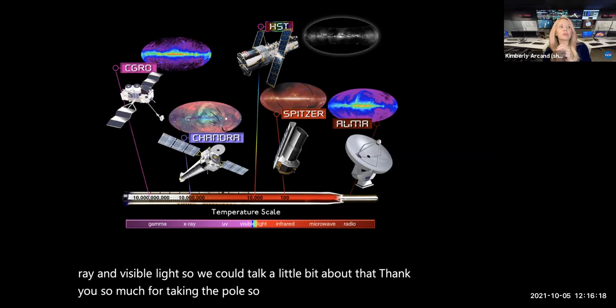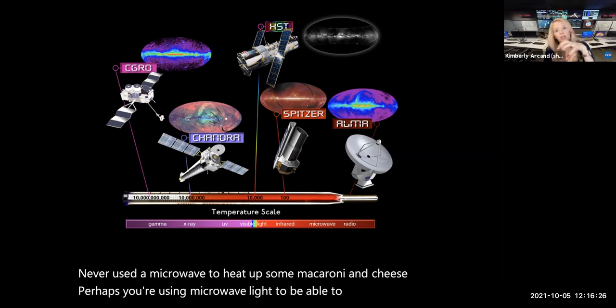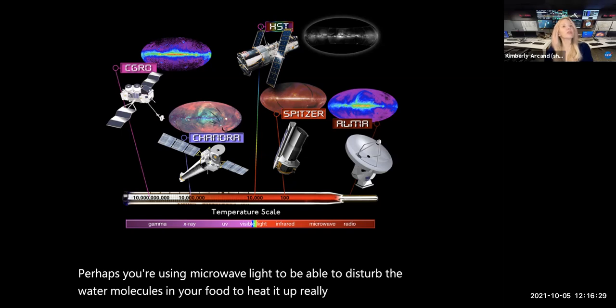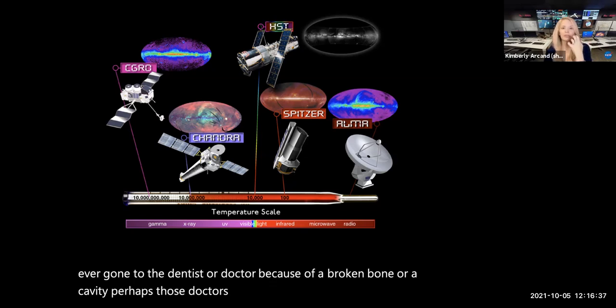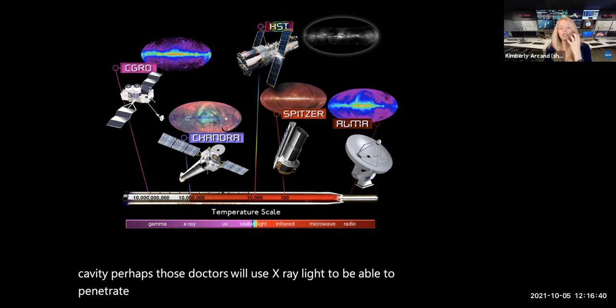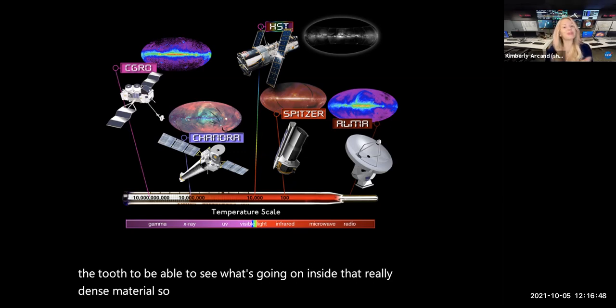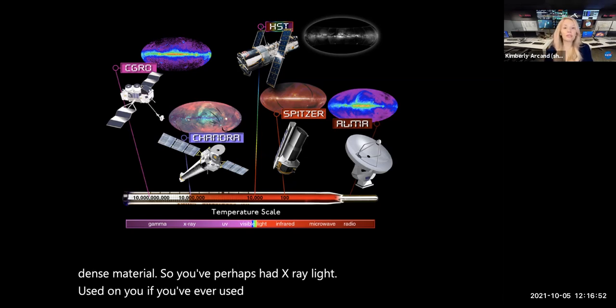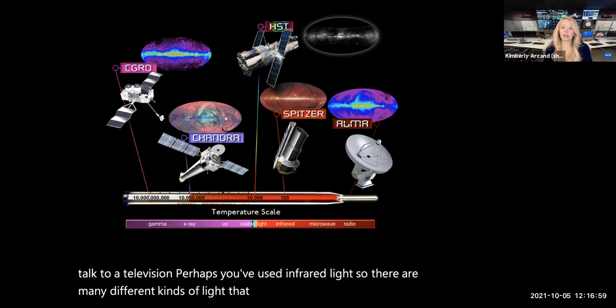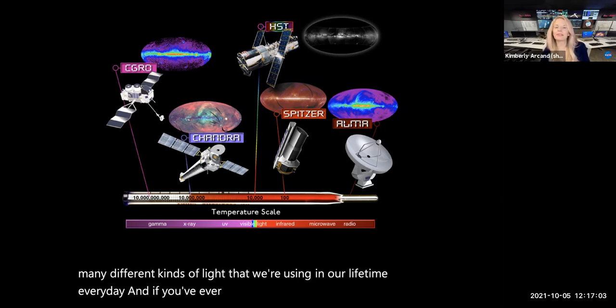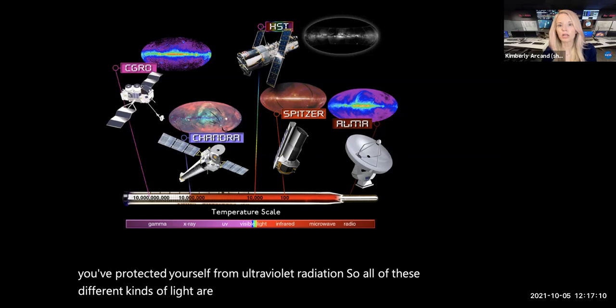And so we're seeing all different kinds of answers trickle in now for our poll on what kinds of light people have experienced or used here on Earth. So we pretty much have even numbers for infrared, ultraviolet, x-ray, and visible light. So we could talk a little bit about that. Thank you so much for taking the poll. So for example, if you've ever used a microwave to heat up some macaroni and cheese, perhaps you're using microwave light to be able to disturb the water molecules in your food to heat it up really quickly. If you've ever gone to the dentist or a doctor because of a broken bone or cavity, perhaps those doctors will use x-ray light to be able to penetrate down through the skin and tissue into the bone or to the tooth to be able to see what's going on inside that really dense material.